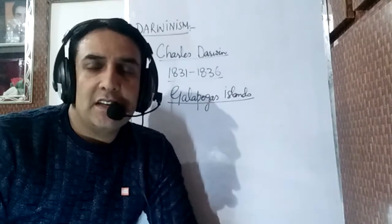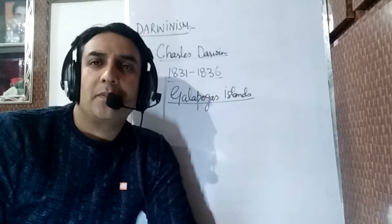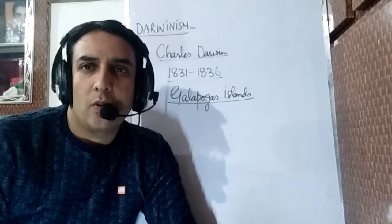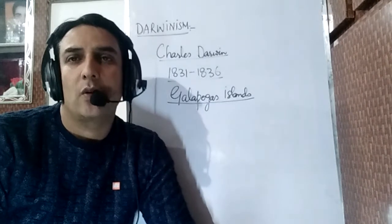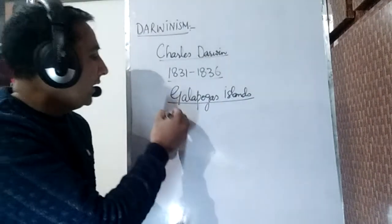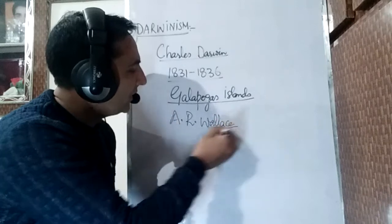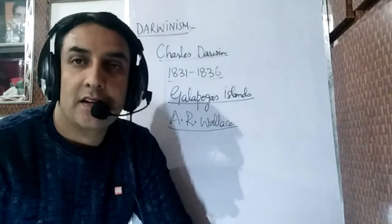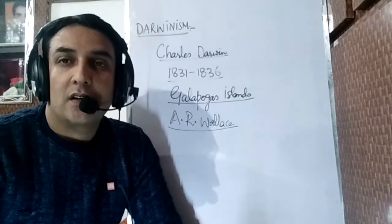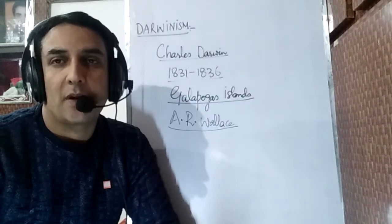Parallel to the research of Charles Darwin, another great scientist, Alfred Russell Wallace, was working on the Malay Archipelago — modern-day Indonesia — studying its flora and fauna. AR Wallace is another very important name associated with evolution. He found many clear indications and evidences of evolution on the Malay Archipelago.